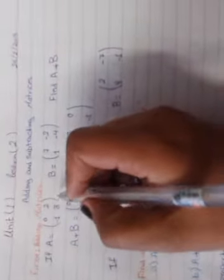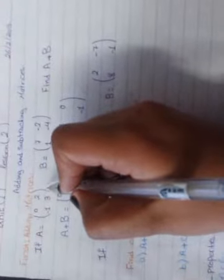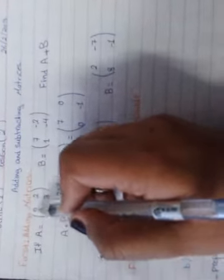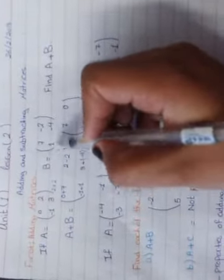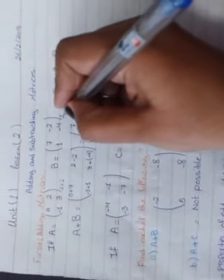We want to first, if you want to add, you want first to know the order of the matrix A. Order of matrix A is 2 times 2. Order of matrix B is 2 times 2.